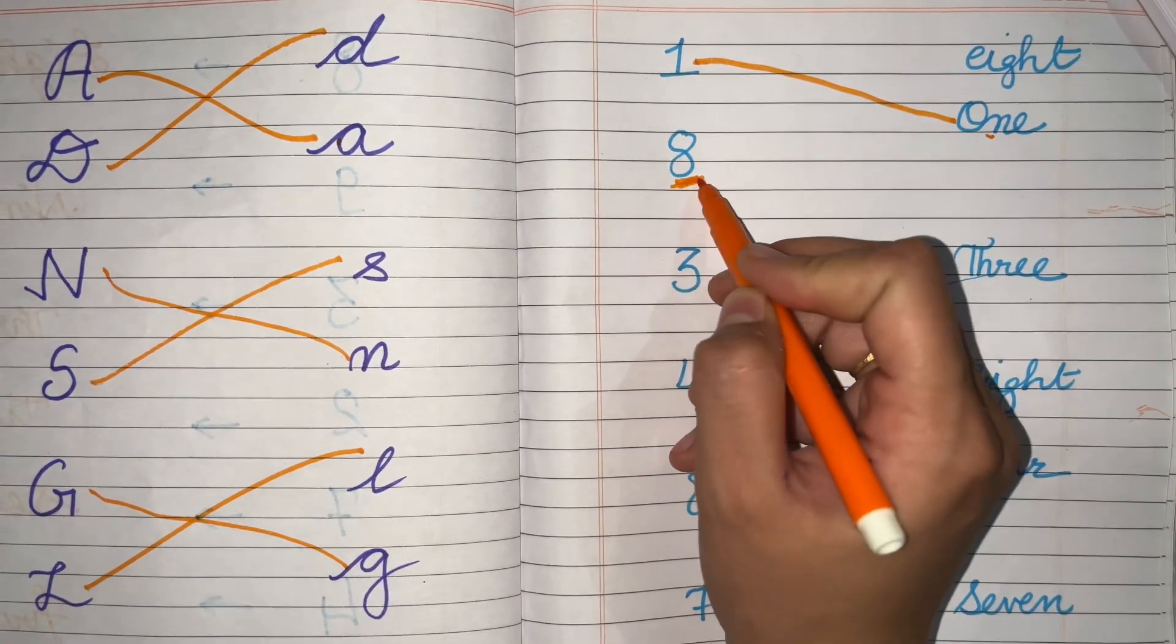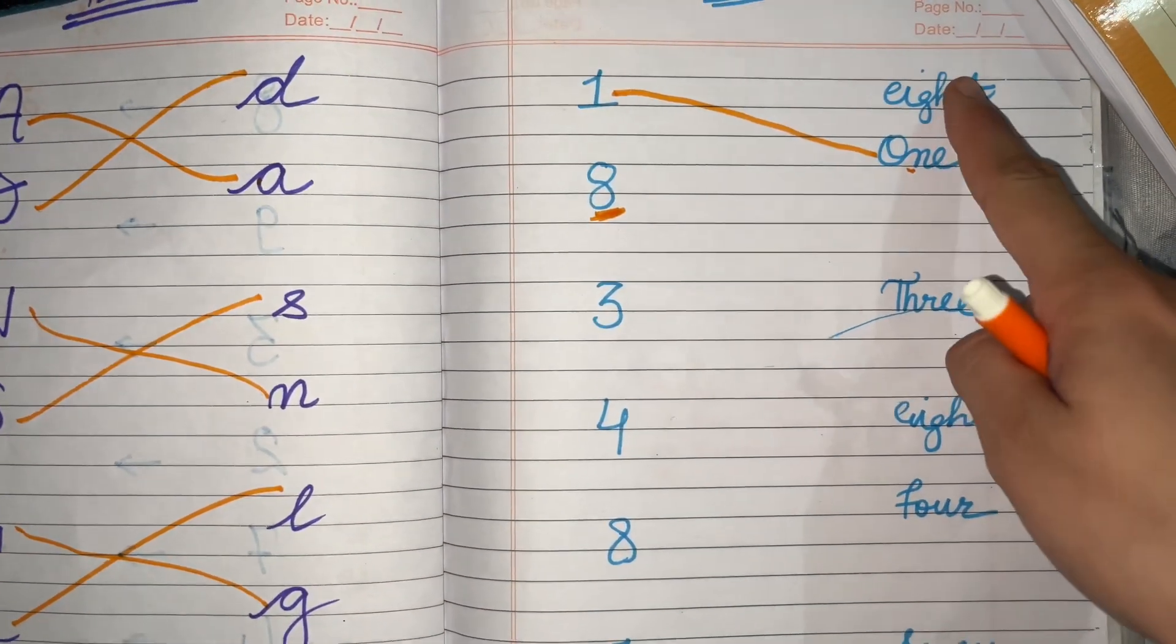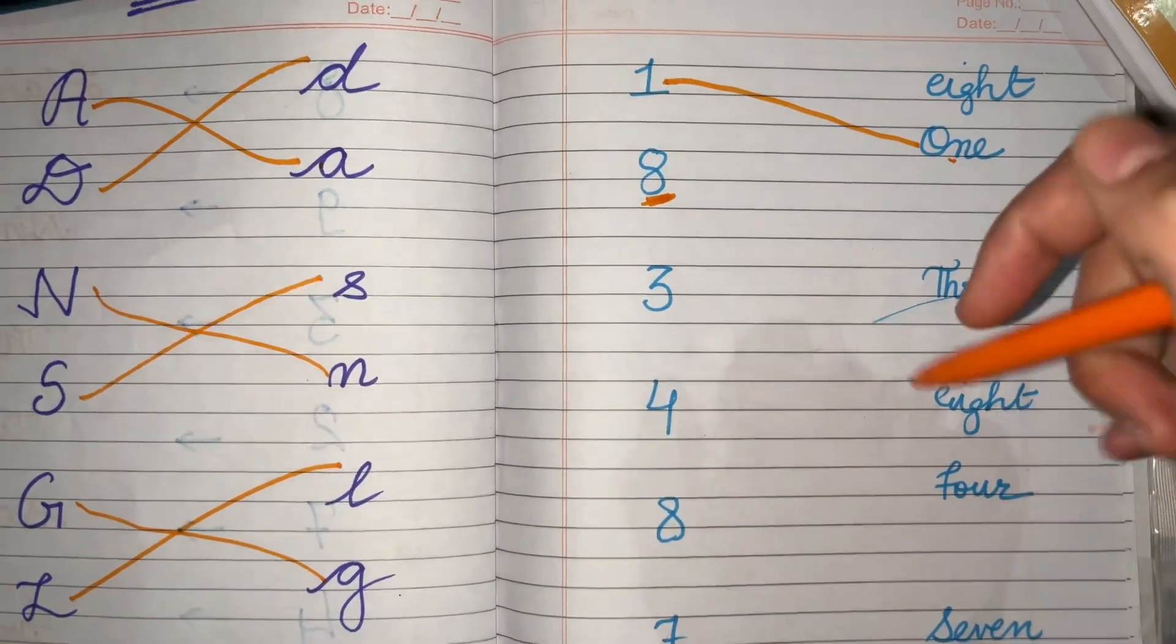Next number is number 8. Find out where is 8? E-I-G-H-T-8. So we'll match it with the 8.